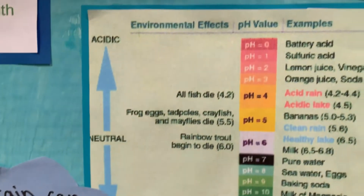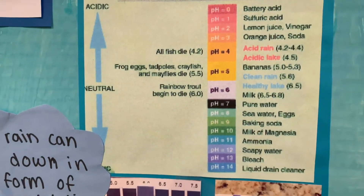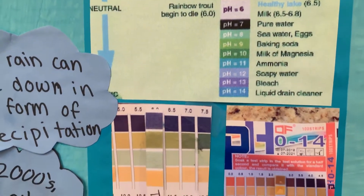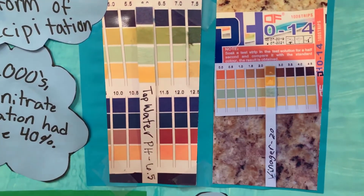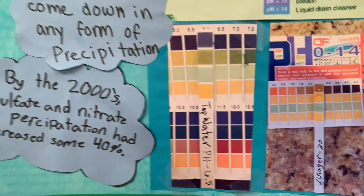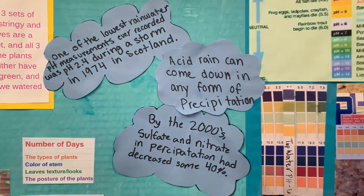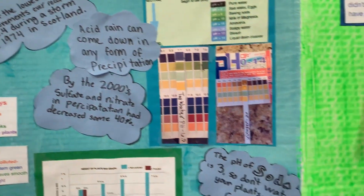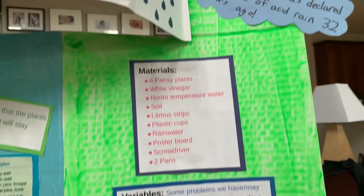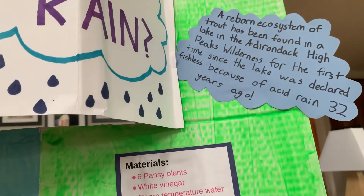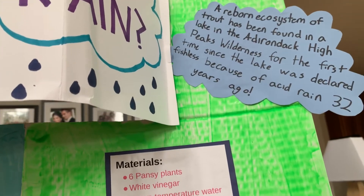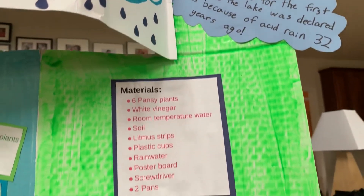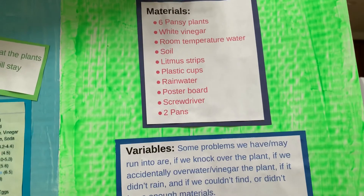This means we should find ways to do things that are better for the environment. And as a bonus, we tried to bring the plants back to life. We watered all six plants with water, but the plants look the same as when we watered them with vinegar. One fun fact is a reborn ecosystem of trout has been found in a lake in the Adirondack High Peaks Wilderness for the first time since the lake was declared fishless because of acid rain 32 years ago.